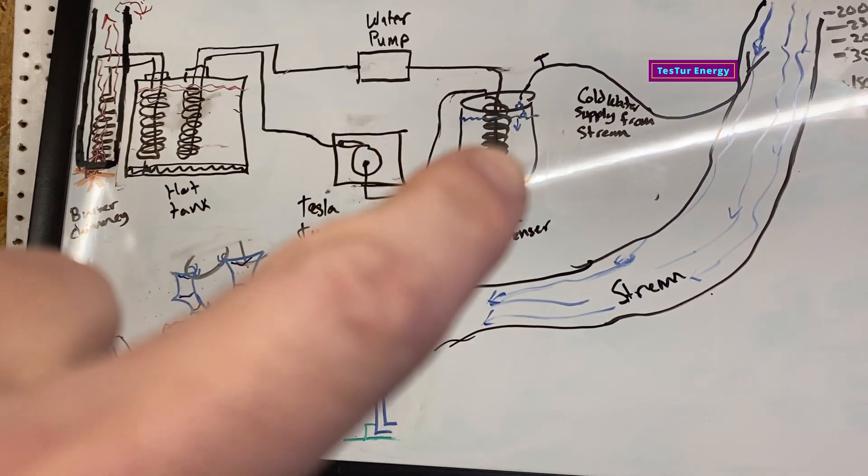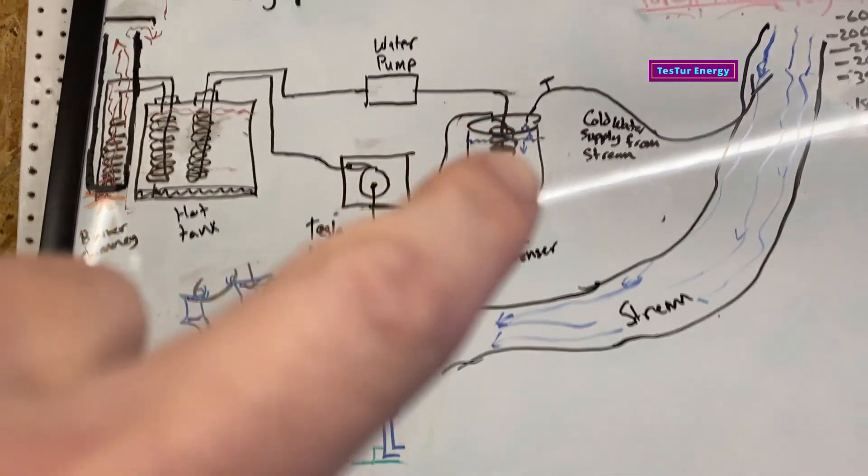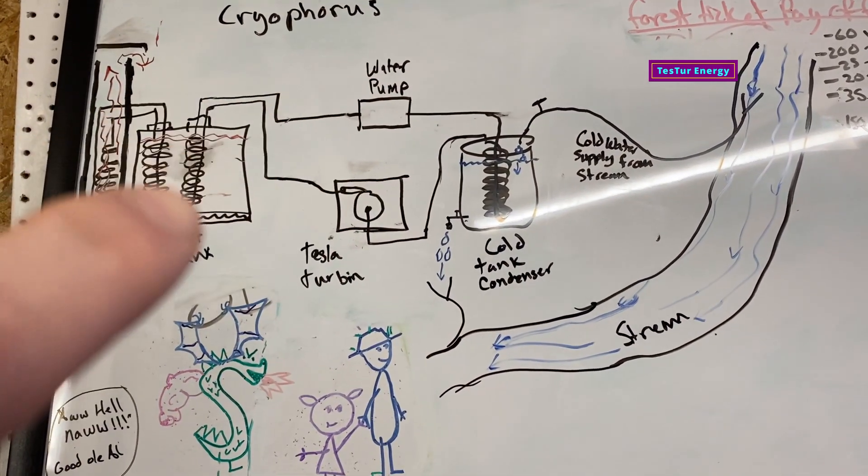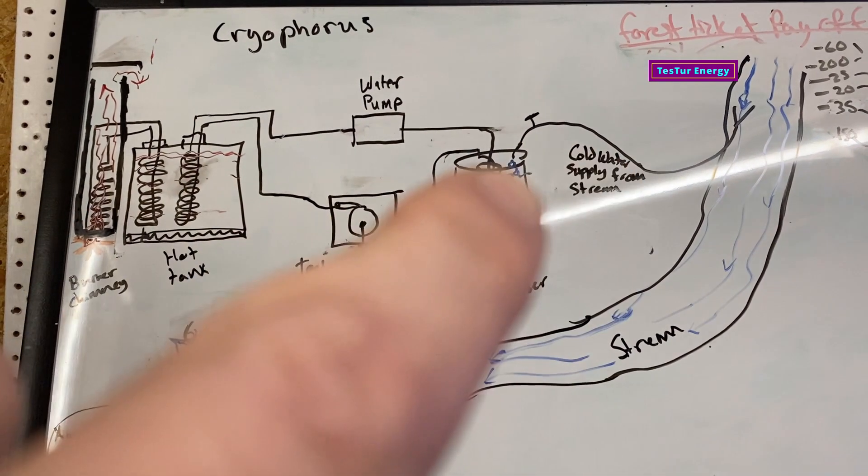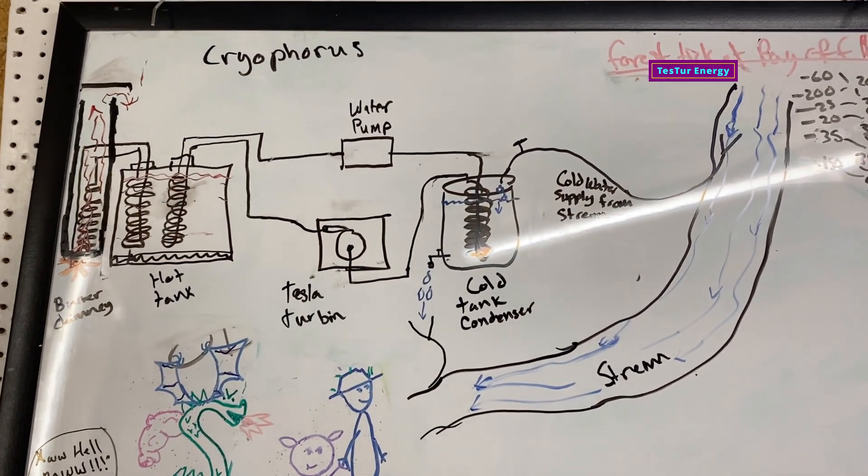On this side it condenses in here and then the pump here pumps it back to the cold side where it'd be higher pressure and it's going to be lower pressure here.